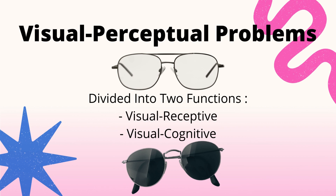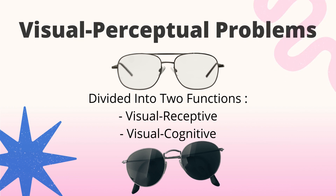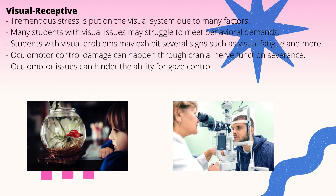Moving on to visual perceptual problems: similar to visual perceptual functions, these are also divided into two categories — receptive and cognitive. Beginning with visual receptive issues, tremendous stress is placed on the visual system due to reasons such as working at near-point visual tasks like reading for long hours or writing closely for extended periods.